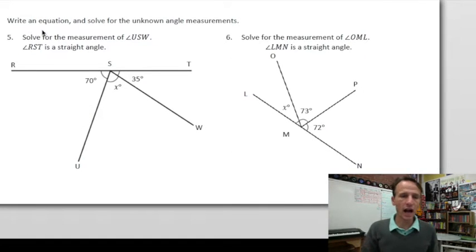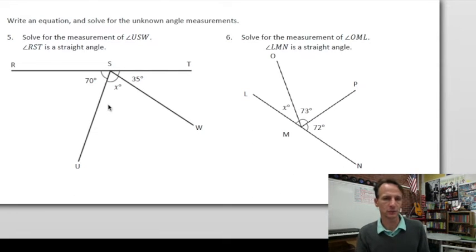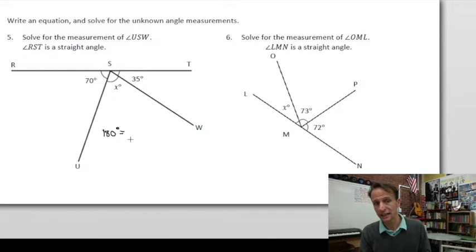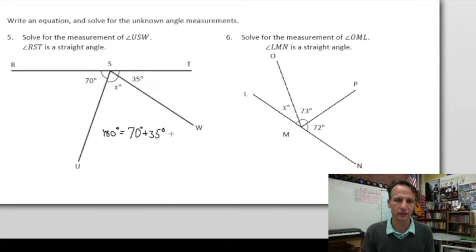All right, let's go on. All right, new instructions. Look at that. Write an equation. So they're not giving us blanks here. And you can tell with a quick glance at the picture is that we are dealing with three angles now. So we have to write an equation and solve for the unknown angle measurements. So we want to solve for the measurement of angle USW. USW, that's this angle x degrees. And we are given that RST, angle RST, is a straight angle. So this whole thing is 180 degrees. And so let's write it in that fashion. In fact, let's write the 180 degrees.